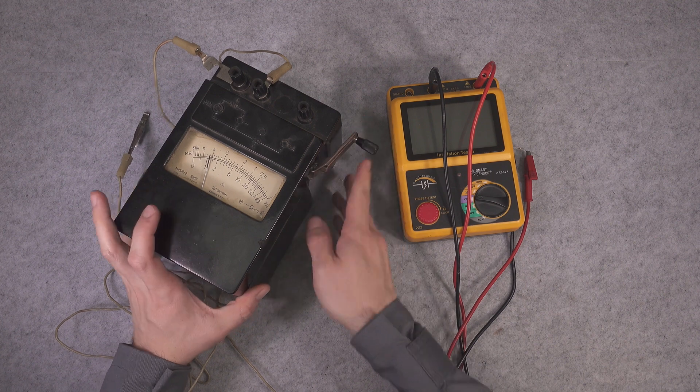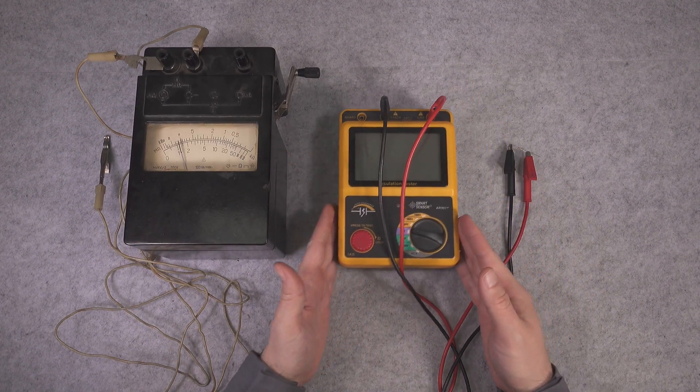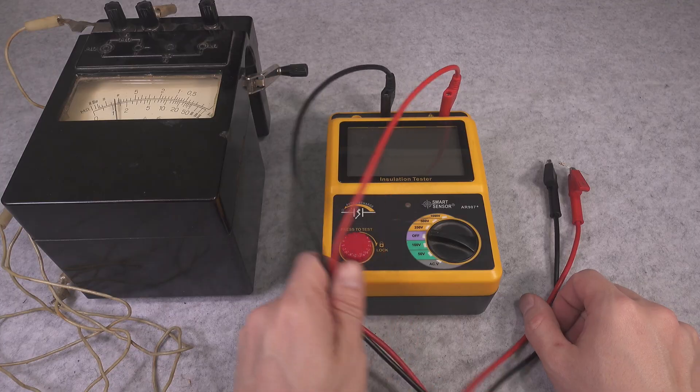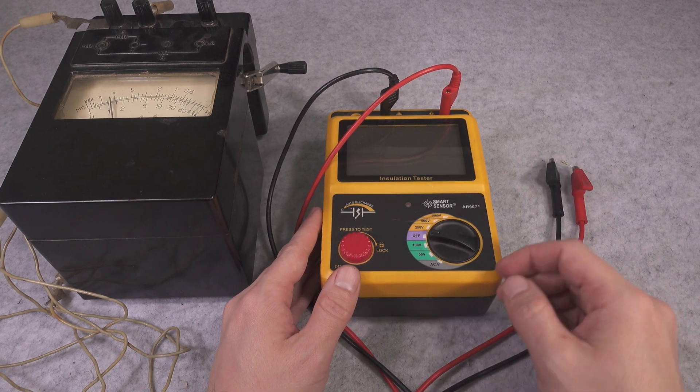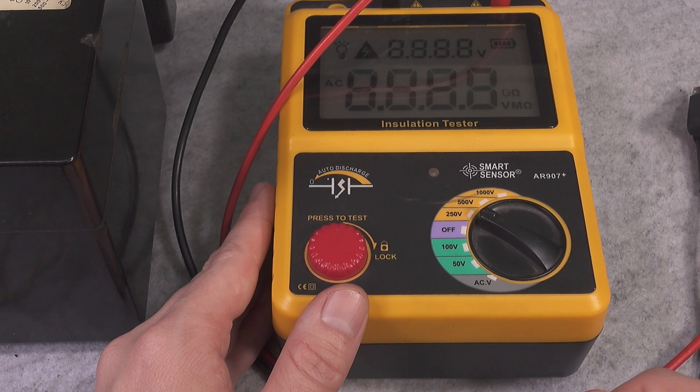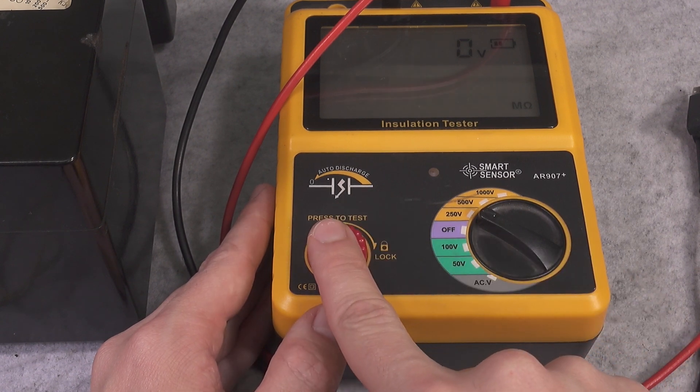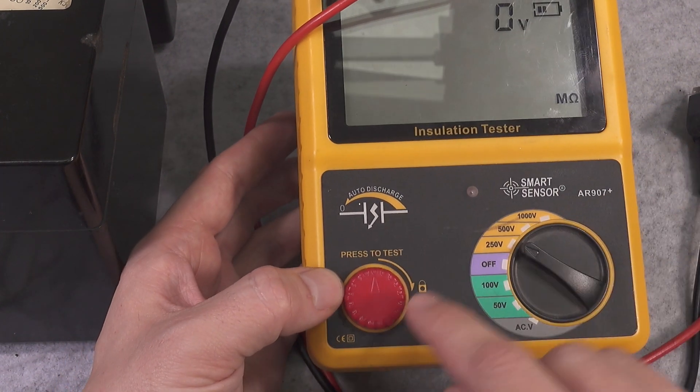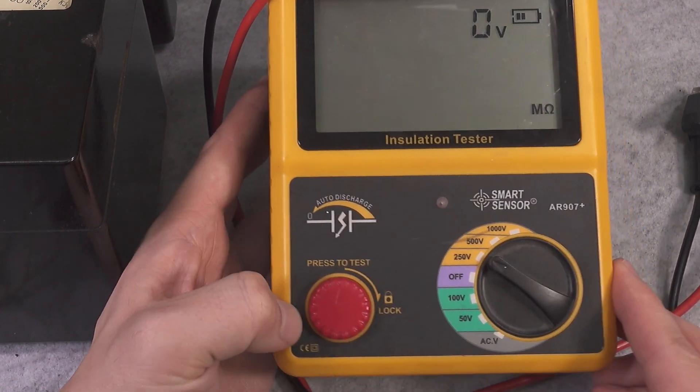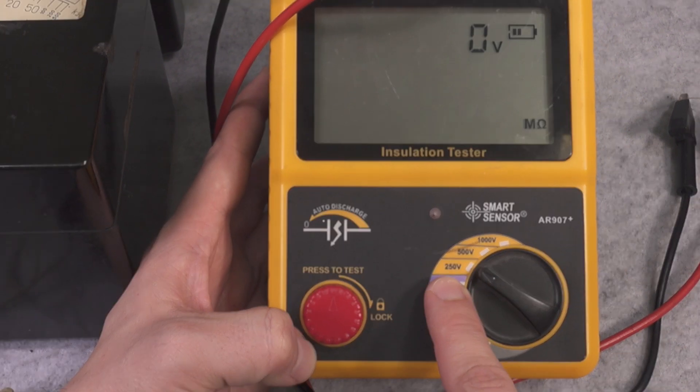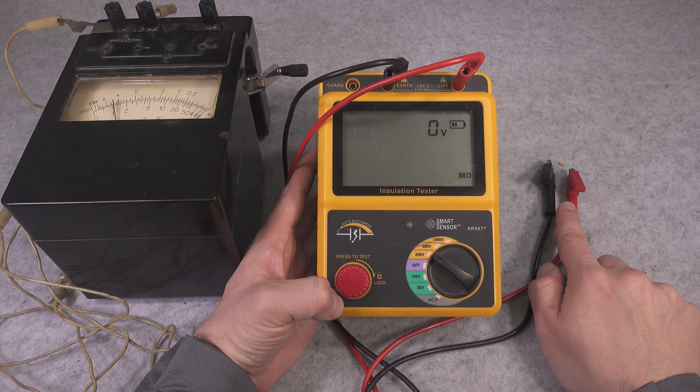Because of the safety reason you have to press that button. Here it is extremely safe because your one hand needs to be on the handle. On a battery operated device you can do something stupid and apply that high voltage to yourself. So as a safety precaution you have to press and hold that button, but there is also a lock but I would not advise to use it.